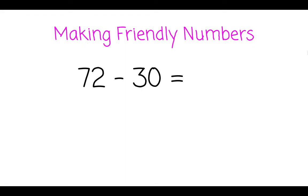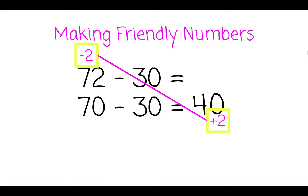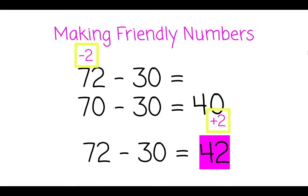Let's try friendly numbers with subtraction. 72 take away 30. We can make 72 friendly by taking 2 away to find a friendly round 70. 70 take away 30 is 40. Add that 2 back that you took away in the beginning. 72 take away 30 is 42.